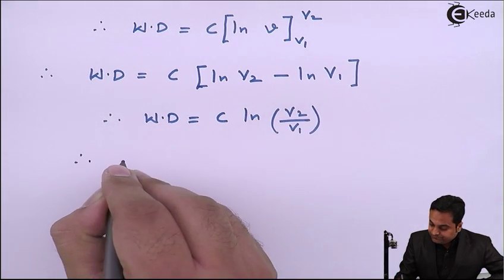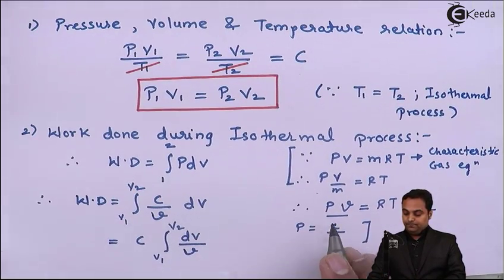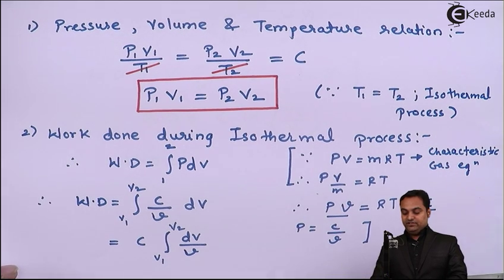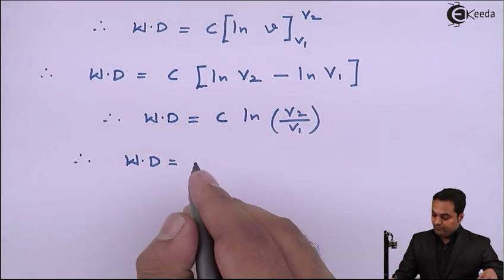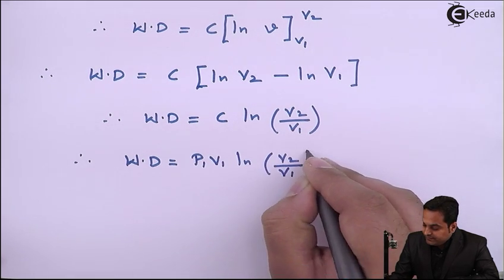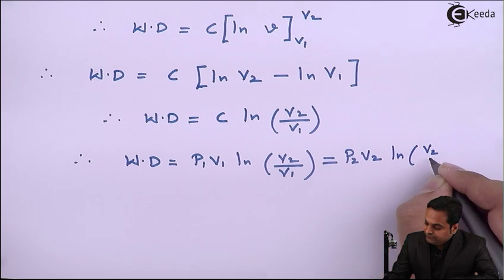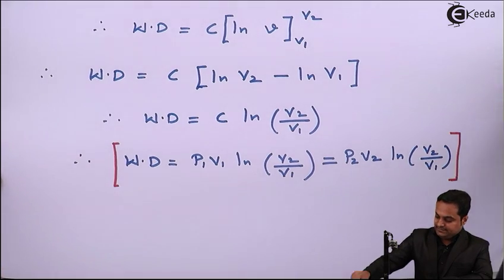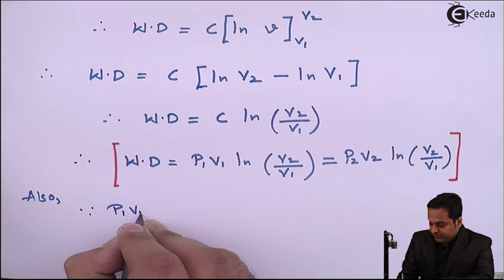The constant C equals pressure times volume, so we can replace C with P1V1 for state 1, or P2V2 for state 2. Therefore the work done formula becomes: W = P1V1·ln(V2/V1), which is also equal to P2V2·ln(V2/V1). This is the formula for work done in an isothermal process.